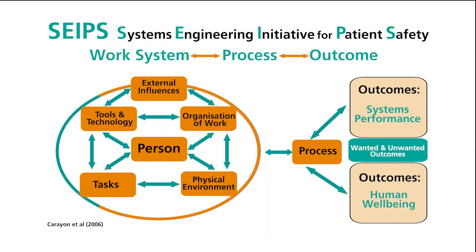Any number of work system components can interact simultaneously at a moment in time to produce outcomes relating to system performance and human wellbeing. These outcomes can be wanted and unwanted, proximal or distal, but all emerging from the same work system. These outcomes often feed directly back into the work system, causing it to adapt and respond in emergent ways.